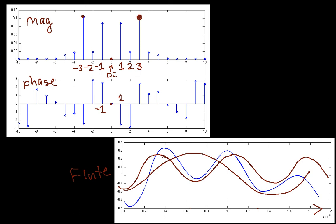To start reconstructing the flute signal, I can add the first harmonic to the third harmonic. When I add them together, I get something that might look like this. This is one of the reasons we do this on a computer — it's a lot easier. It might end up looking something like this.